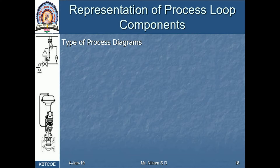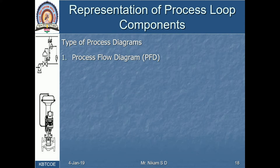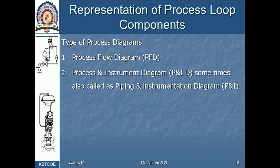Just write down the names. First is the process flow diagram, which is the simplest one if you compare it with the other. And the second one is the process and instrumentation diagram, in which we are having a second part also.